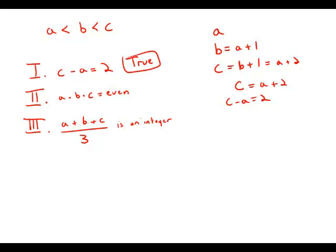Now, statement number two: A times B times C is even. Well, there are two possibilities. Either we have odd, even, odd, or we have even, odd, even. But in either case, when we multiply evens and odds together, we always get an even number. No matter how many odds or evens, as long as one even number is in there, the product is even. So this is true as well.